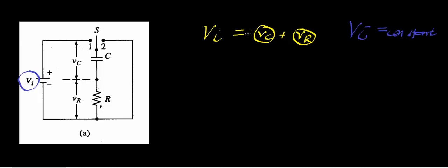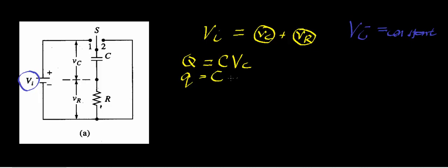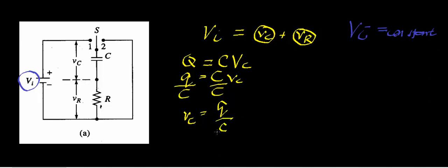As we saw in the last video, the maximum charge a capacitor can carry is equal to the capacitance times the voltage of the capacitor. We can express that in instantaneous notation: Q, the instantaneous charge, equals capacitance multiplied by the instantaneous voltage across the capacitor. Dividing both sides by capacitance gives us: instantaneous voltage across the capacitor equals instantaneous charge divided by capacitance.